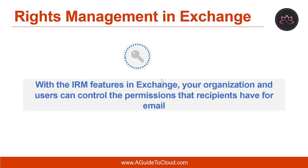First, let's understand Information Rights Management in Exchange. With IRM features in Exchange, your organization and users can control the permissions that recipients have for email. IRM can allow or restrict recipients' actions such as forwarding a message to another recipient, printing a message or attachment, or extracting message or attachment content by copying and pasting. IRM protection can be applied by users in Outlook and Outlook on the web, or it can be based on your organization's message policies and applied using transport protection rules or Outlook protection rules.